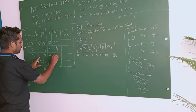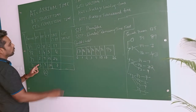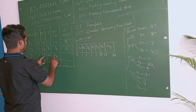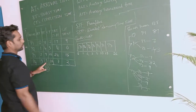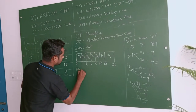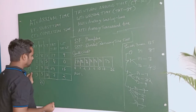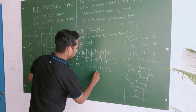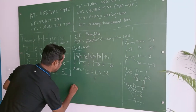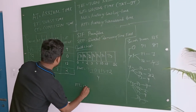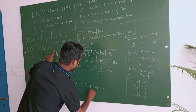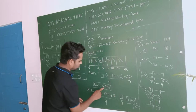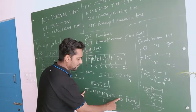Waiting time = turnaround time minus burst time: P1 = 17 - 8 = 9, P2 = 4 - 4 = 0, P3 = 24 - 9 = 15, P4 = 7 - 5 = 2. Average waiting time = (9 + 0 + 15 + 2) / 4 = 26 / 4 = 6.5 milliseconds. Average turnaround time = (17 + 4 + 24 + 7) / 4 = 52 / 4 = 13 milliseconds.